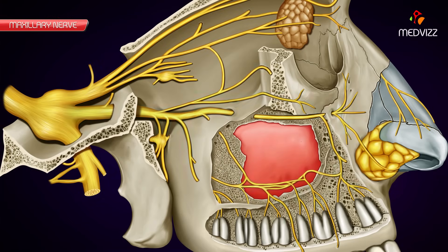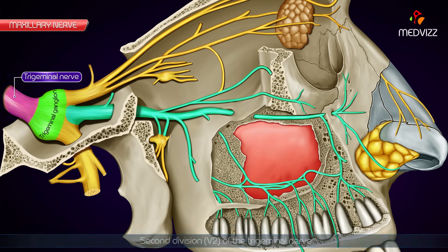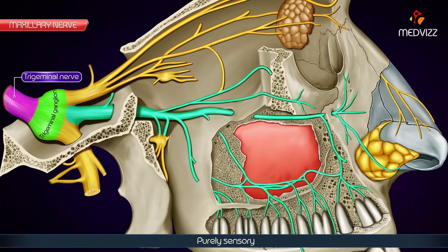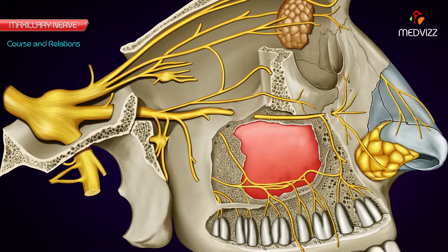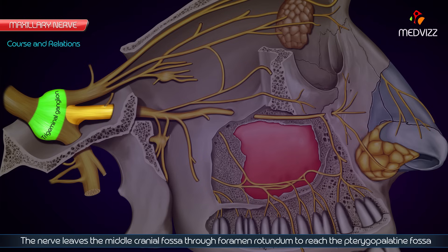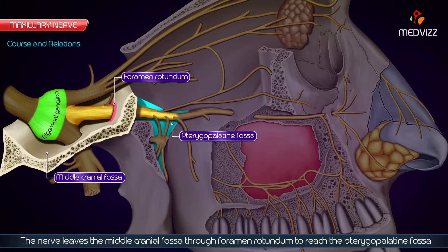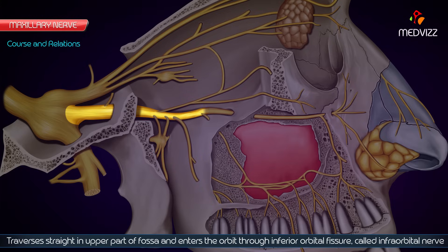The maxillary nerve, the second division of the trigeminal nerve, is purely sensory. It arises from the convex anterior border of the trigeminal ganglion. The nerve leaves the middle cranial fossa through the foramen rotundum to reach the pterygopalatine fossa, traversing straight through the upper part of the fossa and entering the orbit through the inferior orbital fissure.